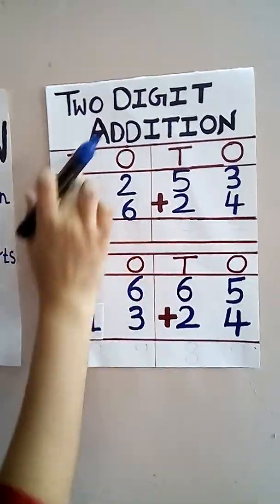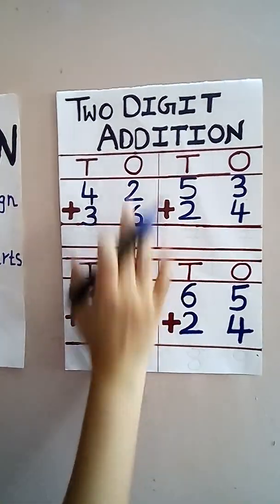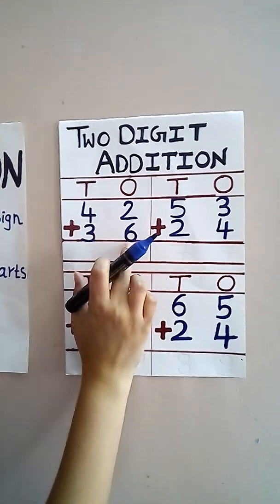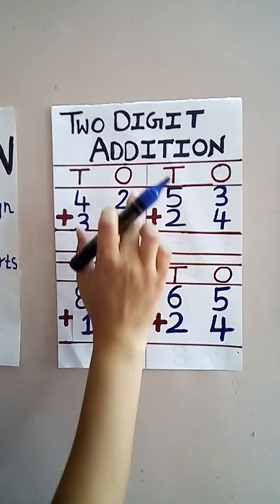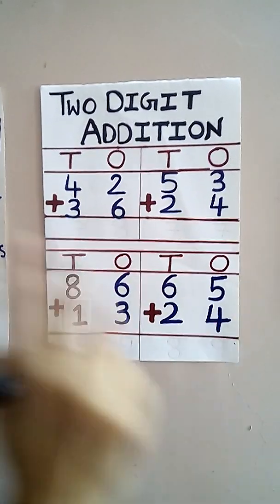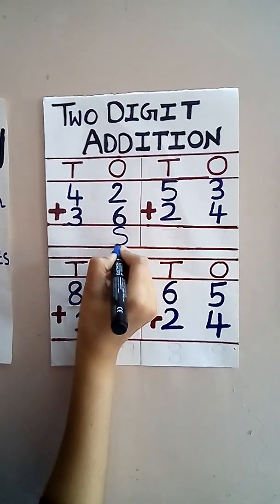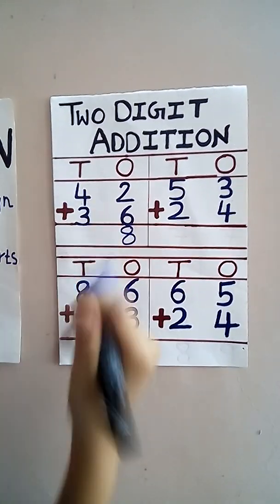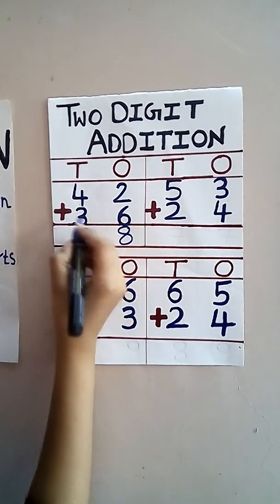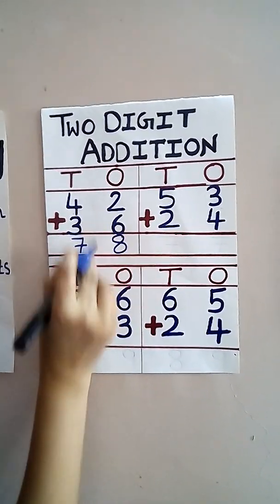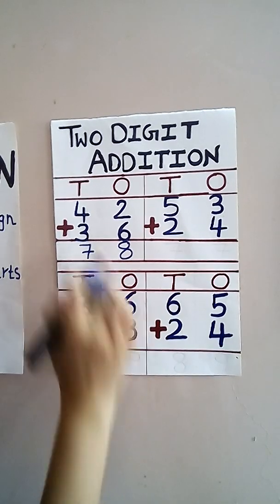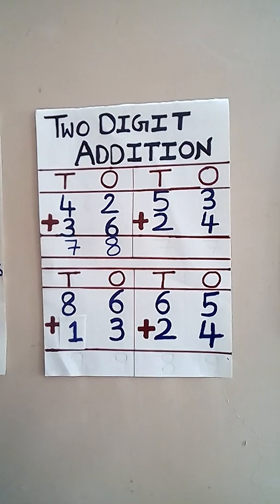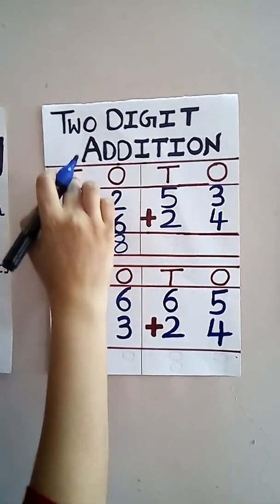This is ones and this is tens. We have to start from the back side. See, what is this? This is six. We have to add two to it. So keep six in your mind and then two — six, seven, eight. Write down eight here. Now four tens and three tens — add them: four, five, six, seven. We got seven tens. When we add 42 and 36, we get seventy-eight. Means seven tens and eight ones.